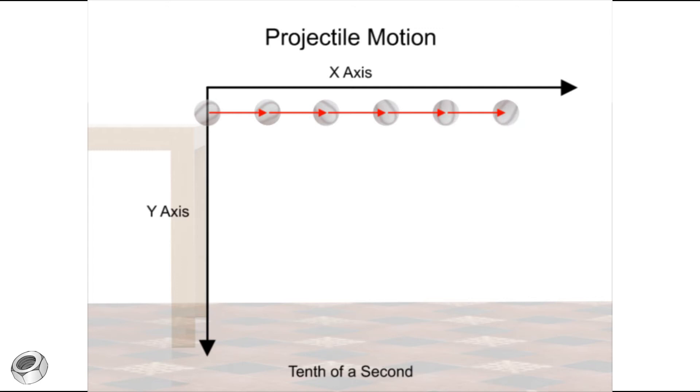Notice that the ball's horizontal movement is equidistant for every unit of time. This is because there is no force accelerating the ball away from the table. The only force acting on the ball is gravity, accelerating the ball towards the ground.